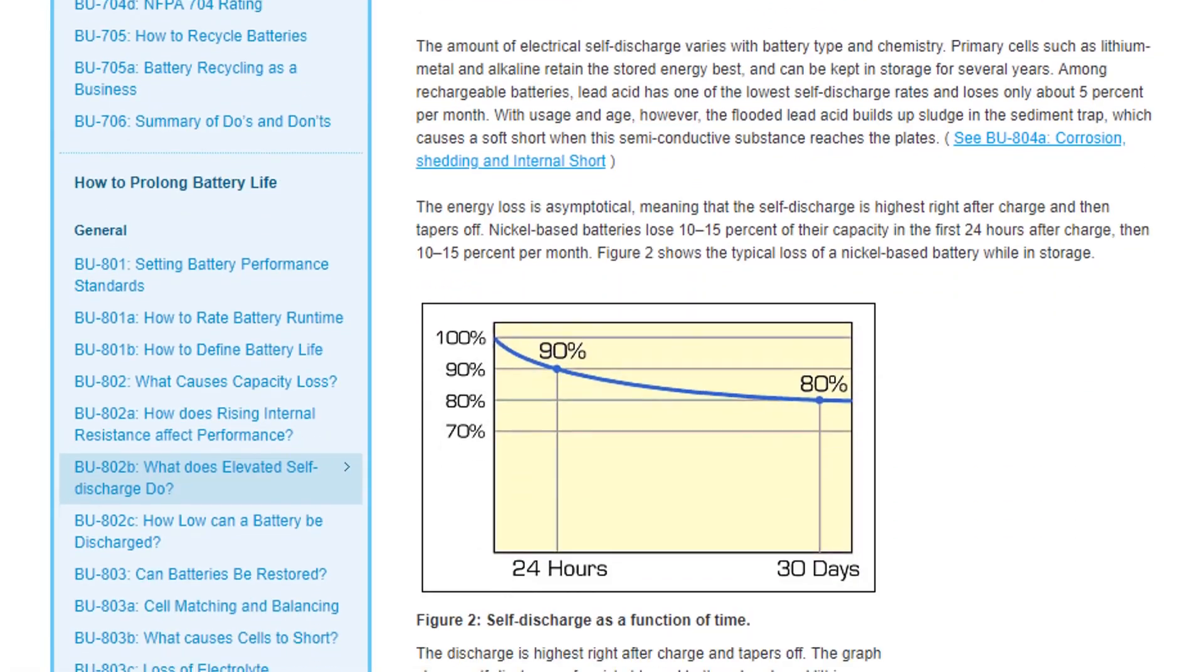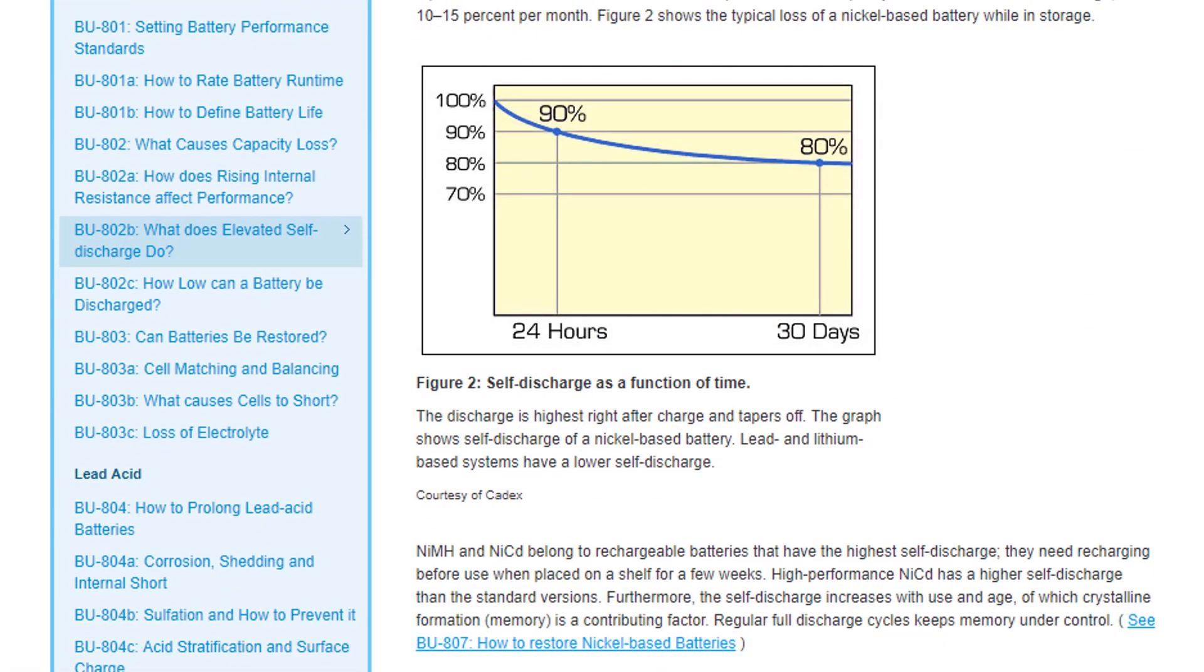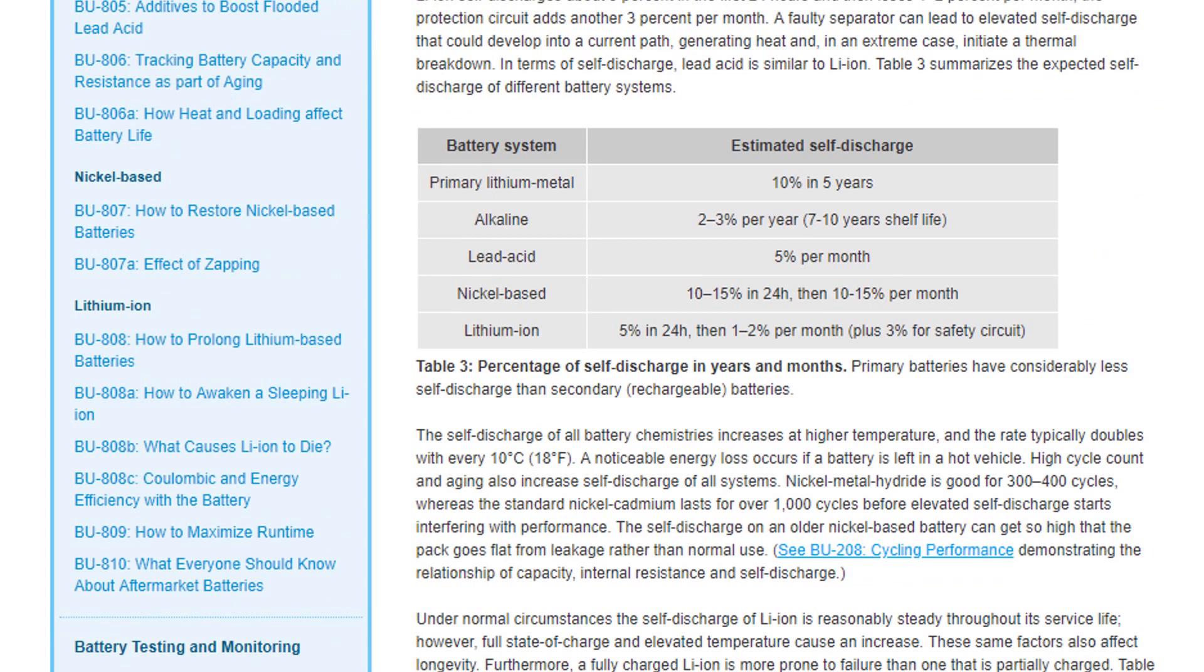All batteries will slowly lose their charge over time. Lucky for us, alkaline cells have some of the best shelf life, losing only 2-3% of their capacity in a year. As a result, we should not need to worry about this, especially if we go with the very conservative 100 microamp average draw. If you want to use an alkaline battery for longer, or you are considering other chemistries, you will need to take the self-discharge rate into account.